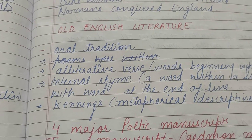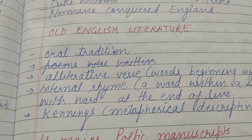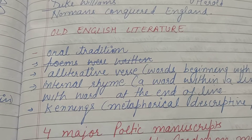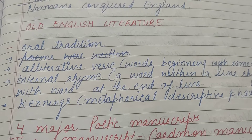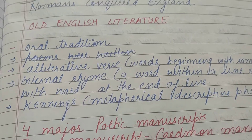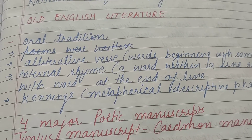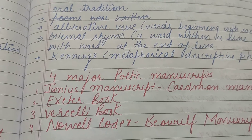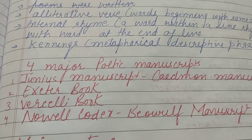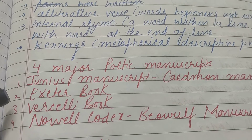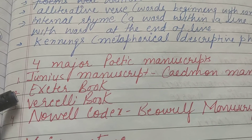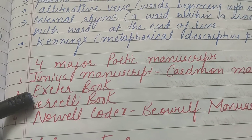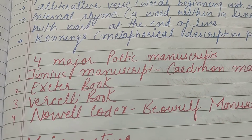Old English Literature basically oral tradition mein hoti thi — oral tradition, ek generation se doosri generation orally pass hota tha wo literature. Alliterative words ka use hota tha — words beginning with the same sound, same sound se jo words aate the wo repetitively use hote the. Internal rhyme ka bhi use hota tha — ek line mein ek word aata hai jo ki last word se rhyme karta hai. Old English Literature ke manuscripts ko preserve kiya gaya hai four major manuscripts mein: Junius Manuscript, Exeter Book, Vercelli Book, and Nowell Codex. Exeter Book ko Exeter Codex bhi kehte hain, Vercelli Book ko Vercelli Codex bhi kehte hain.